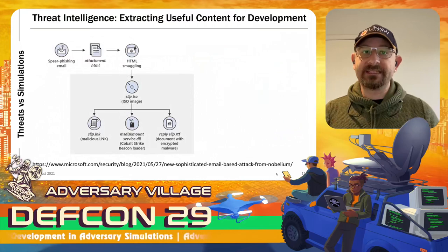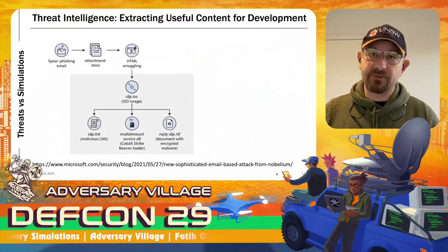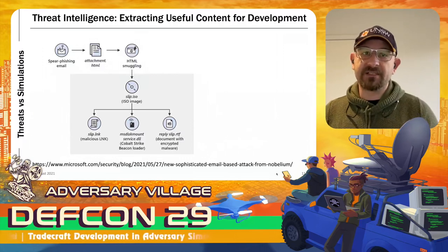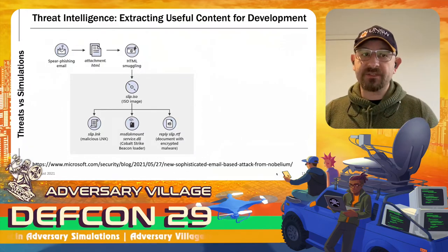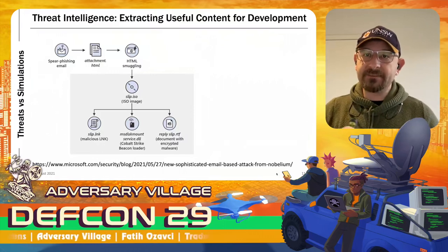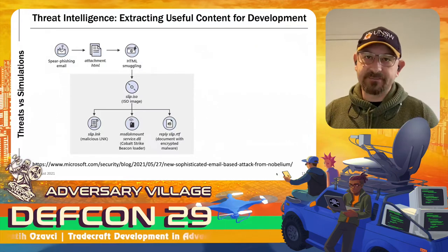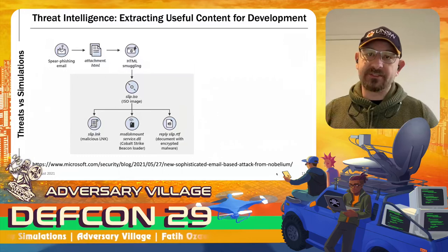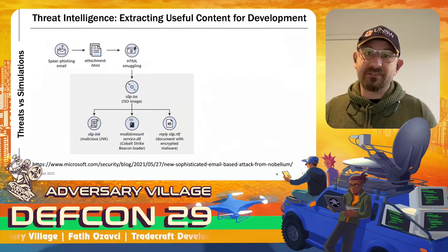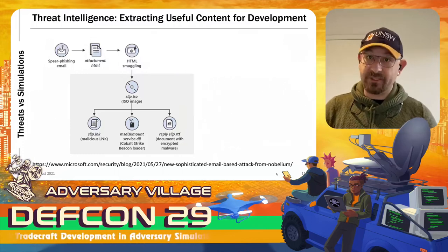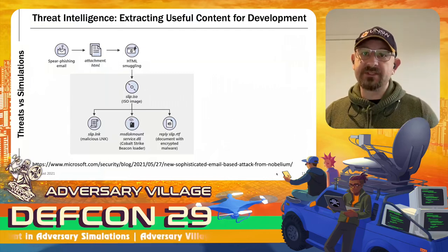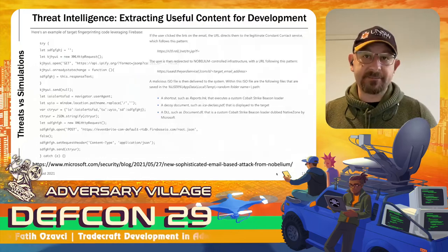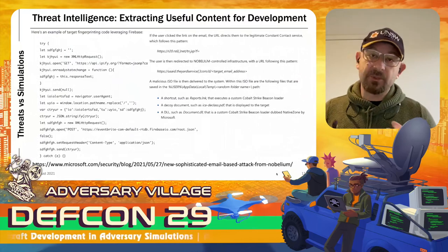When we read the report carefully we can see additional campaigns. This is another Nobelium example where they sent an email, started a JavaScript file with HTML smuggling, downloaded an ISO, mounted it, and executed code. The ISO was decoded — it simply writes the ISO to disk. You can use JavaScript to download the ISO or encode it as Base64, decode it on the fly, and make it an HTML file. The intelligence report gives you the ISO content, how the LNK file works, commands and parameters, and script content to develop this tradecraft.